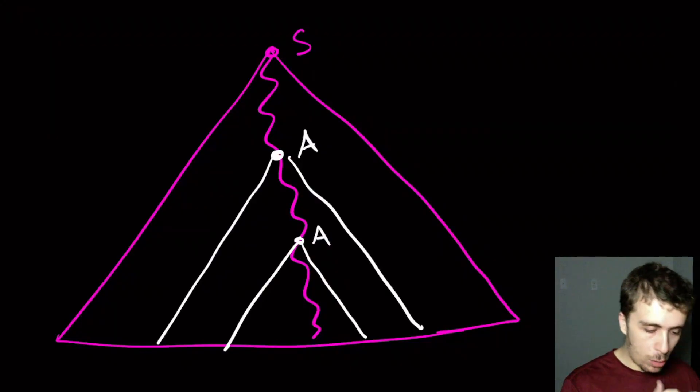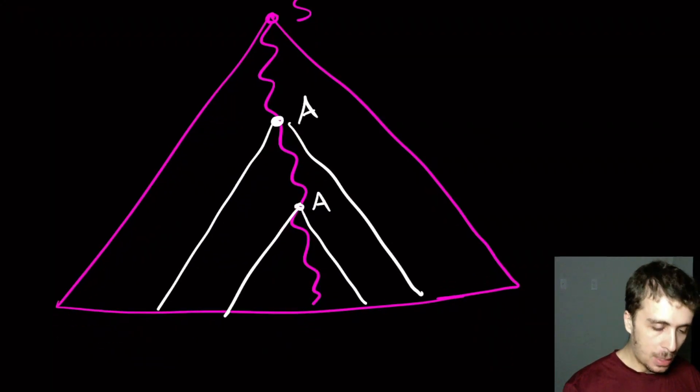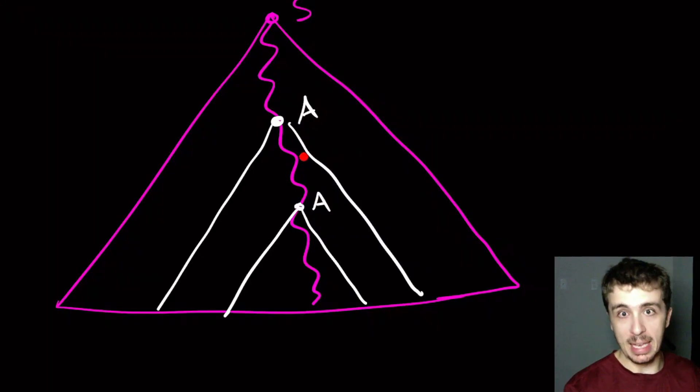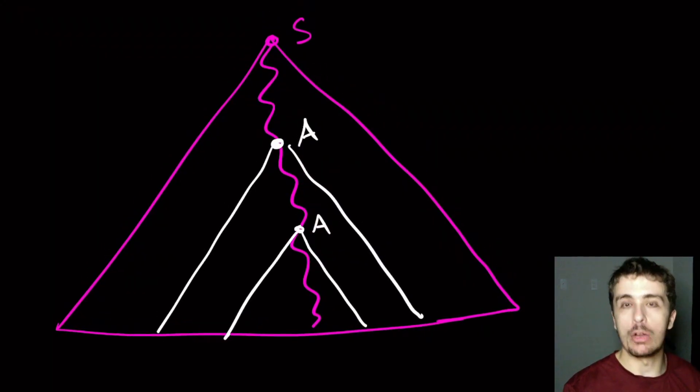So then what do we actually do here? We say each one of these two variables must generate something of the string. They can't be empty because the only way in Chomsky normal form to make a string that is empty is with the start variable. And these are not the start variable.